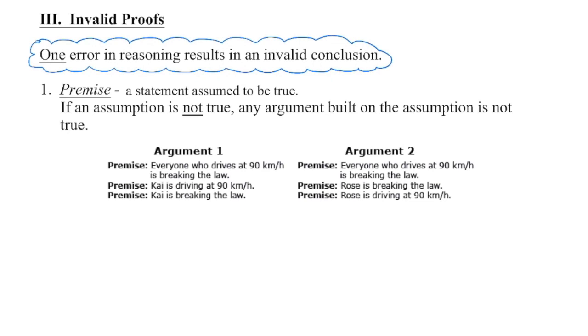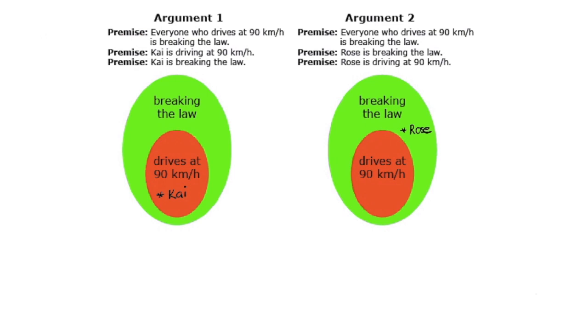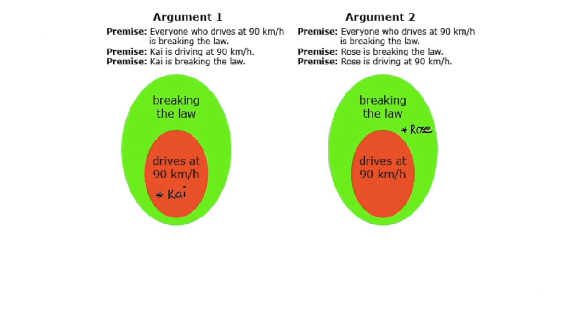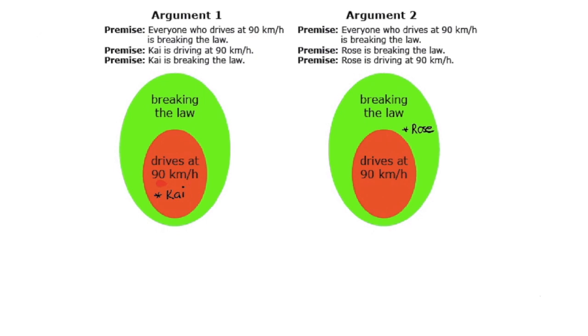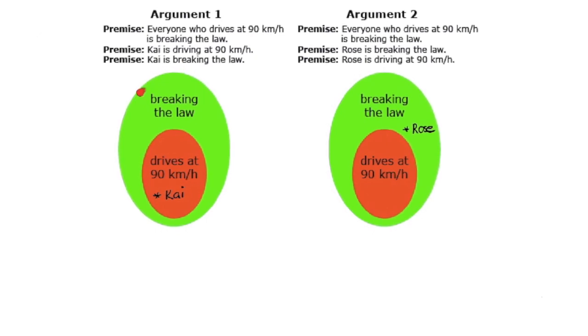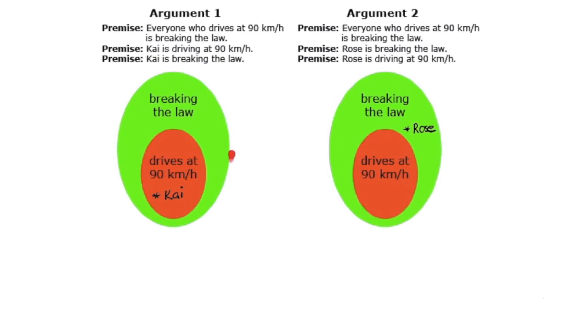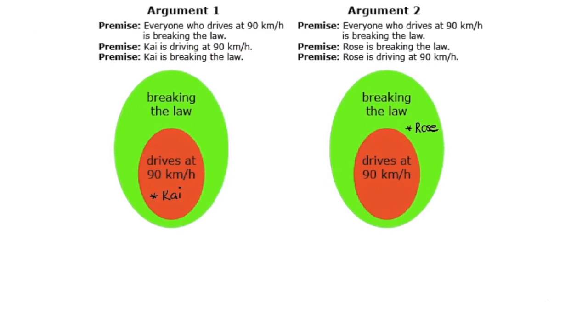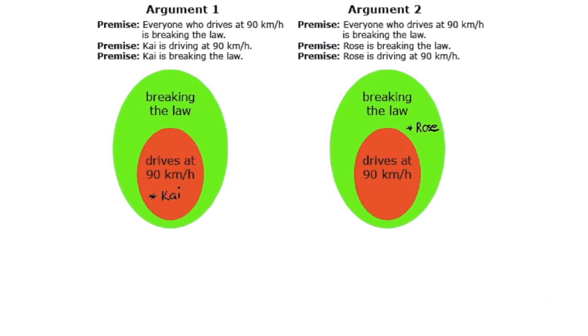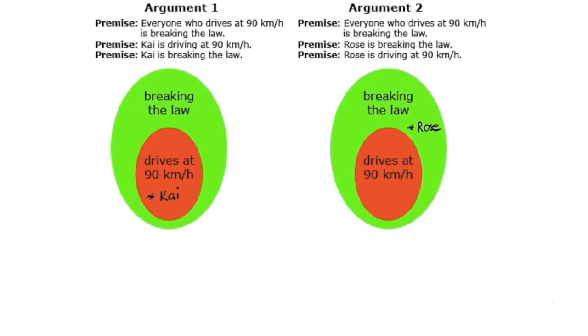So I want you to pause the video and take a look at these two arguments and see, is each argument valid? I've drawn a Venn diagram to help organize the information. Our first premise says that everyone driving at 90 kilometers per hour is breaking the law. So 90 kilometers per hour, that is in the category of things we could do to break the law. Now we're also told Kai is driving at 90 kilometers per hour, so I put Kai into that circle there and therefore Kai would be breaking the law.